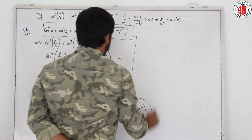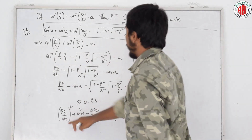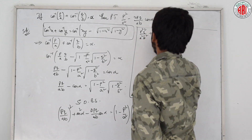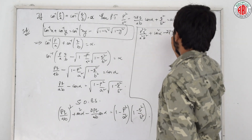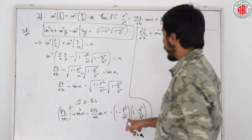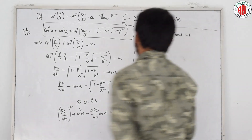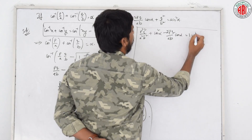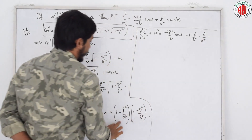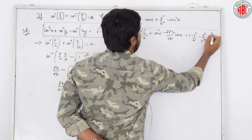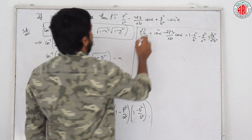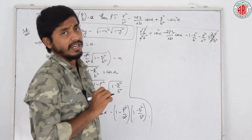Now let us multiply and simplify on both sides. On the left: p square q square by a square b square plus cos square alpha minus 2pq by ab cos alpha. On the right, multiplying each term: 1 into 1 is 1, minus q square by b square, minus p square by a square, and minus into minus gives plus p square q square by a square b square. Now p square q square by a square b square terms on both sides cancel.